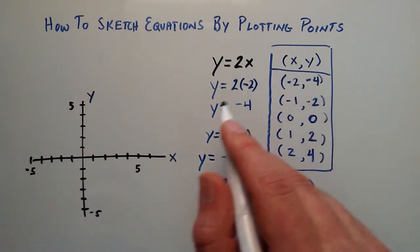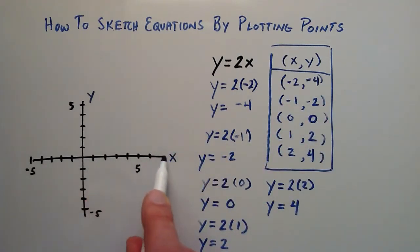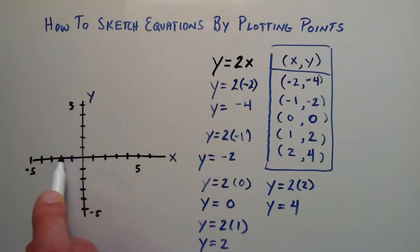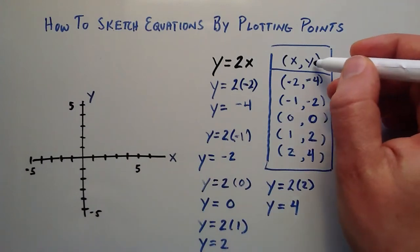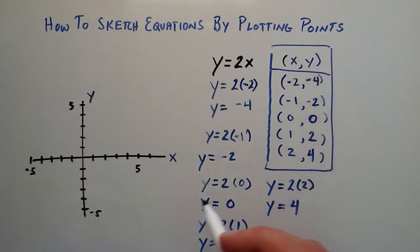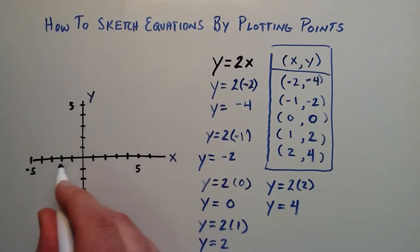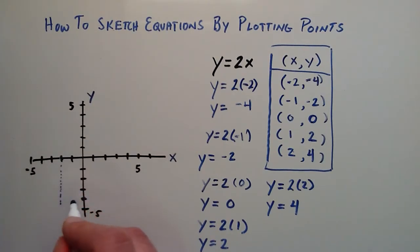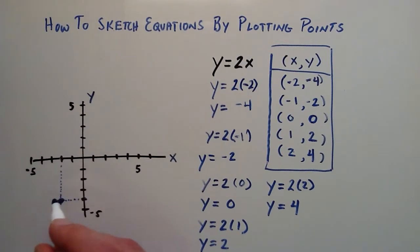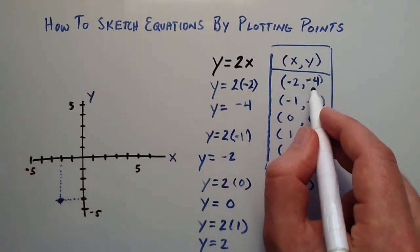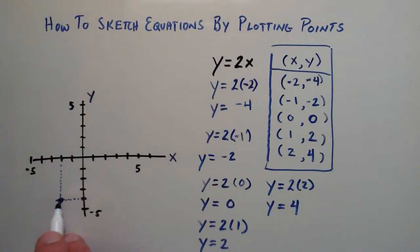Starting with the first point, we have an x component of negative 2. Starting at 0 on the x-axis, we go over to negative 1, negative 2. That's our x component. It has a corresponding y component of negative 4, so on the y-axis we go from 0 down to negative 1, negative 2, negative 3, negative 4. We project dotted lines from those values, and where those two projections cross is the point negative 2, negative 4.